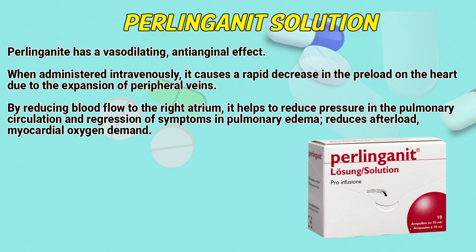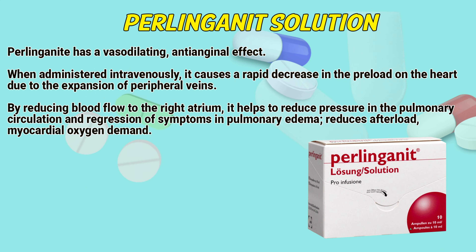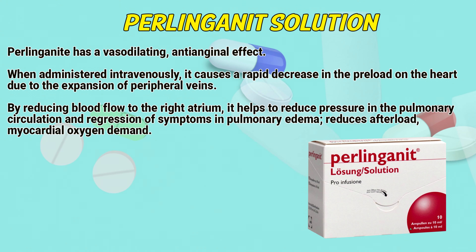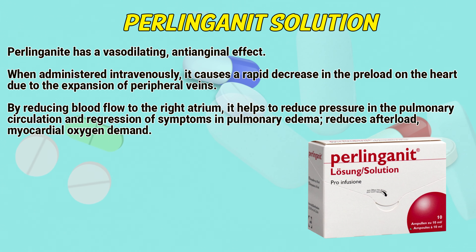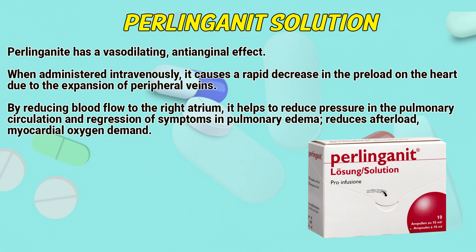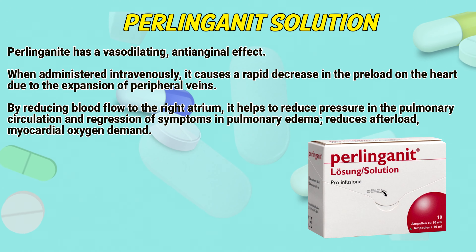Perlingonide has a vasodilating and antianginal effect. When administered intravenously, it causes a rapid decrease in the preload on the heart due to the expansion of peripheral veins. By reducing blood flow to the right atrium, it helps to reduce pressure in the pulmonary circulation and regression of symptoms in pulmonary edema. It also reduces afterload and myocardial oxygen demand.